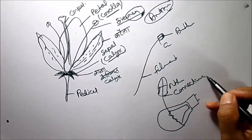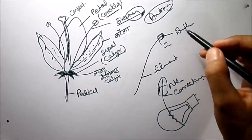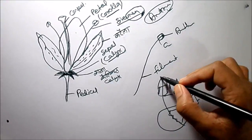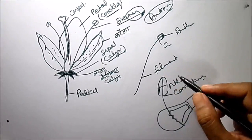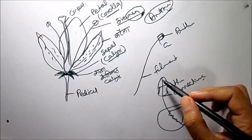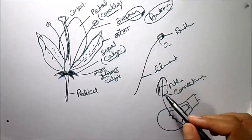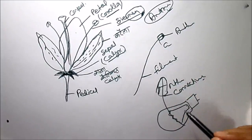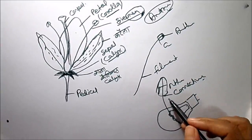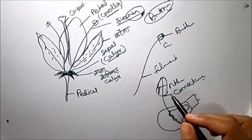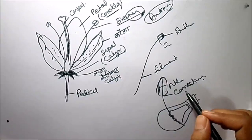We can memorize 'A4 anther'. Here you can see pollen grains are present on the anther. So the three parts to memorize are: anther, filament, and connective.